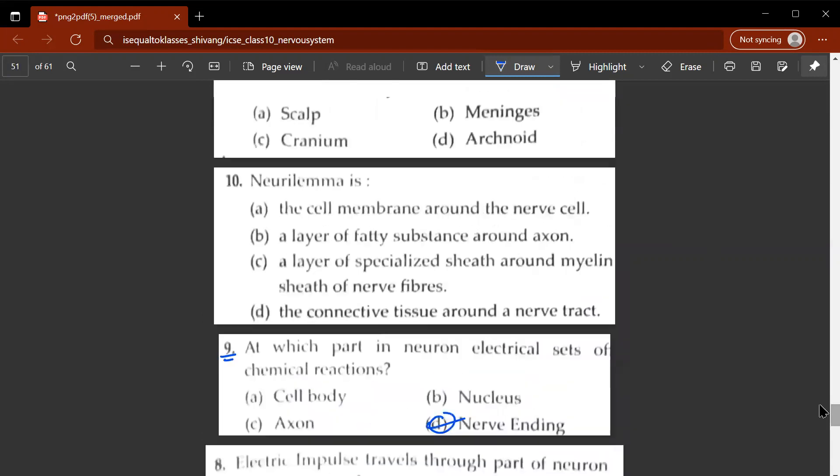Tenth question, neurolemma is the cell membrane around the nerve cell, a layer of fatty substance around axon, a layer of specialized sheath around myelin sheath of nerve fibers or the connective tissue around the nerve tract. So this would be C. It is a layer of specialized sheath around the myelin sheath of nerve cells.